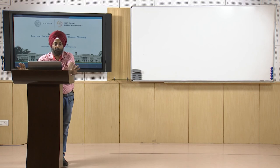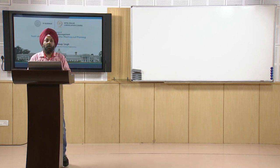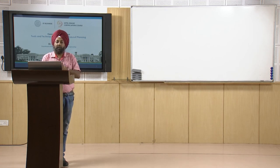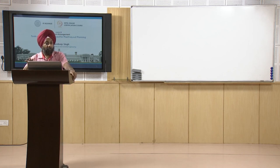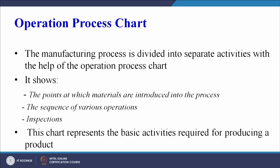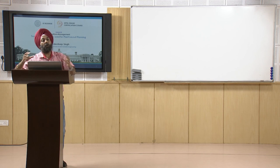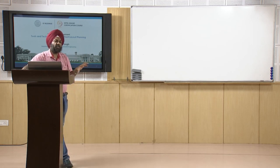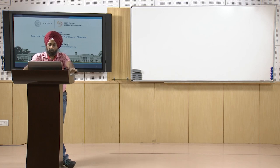The operation process chart gives a true overall representation of the activities happening within the organization. It shows the point at which materials are introduced into the process, the sequence of various operations, and the inspections. This chart represents the basic activities required for producing a product. Let us understand this with an example shown in the diagram.